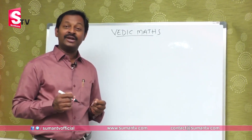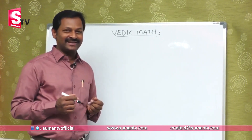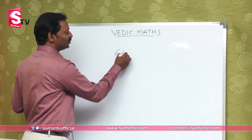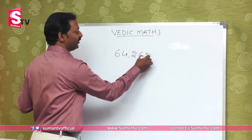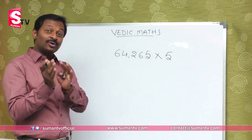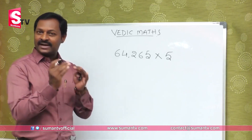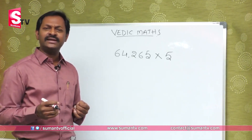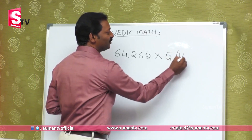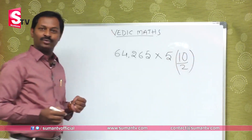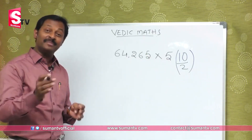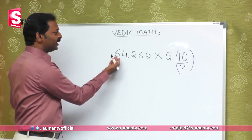I will give you another example. You have even numbers — I will tell you. Suppose 64,265 is multiplied by 5. Okay, so here, two things are important. One is, if the number is even you can divide directly. That is the method: 5 means 10 by 2, so multiply by 10 and divide by 2. By 2 means the number is halved.